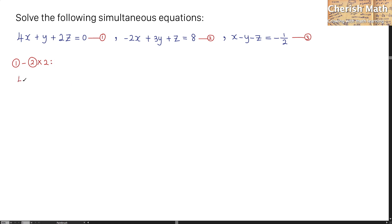So that turns 4x plus y plus 2z equal 0 minus the entire equation here multiplying by 2. That turns negative 4x plus 6y plus 2z is equal 16. And I have to solve it by elimination method.